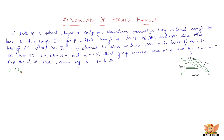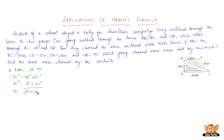In triangle ABC, angle B equals 90 degrees. Therefore, using the Pythagorean theorem, AC² equals AB² plus BC². So AC² equals 9² plus 40², which is 81 plus 1600 equals 1681. Therefore AC equals the square root of 1681, which is 41 meters.